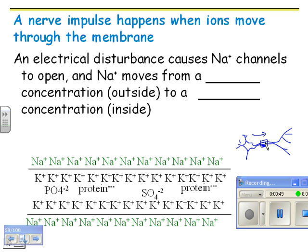Out here, that's the sodium that's here. And then on the inside of the neuron, you've got potassium. So a nerve impulse happens when ions move through the membrane.